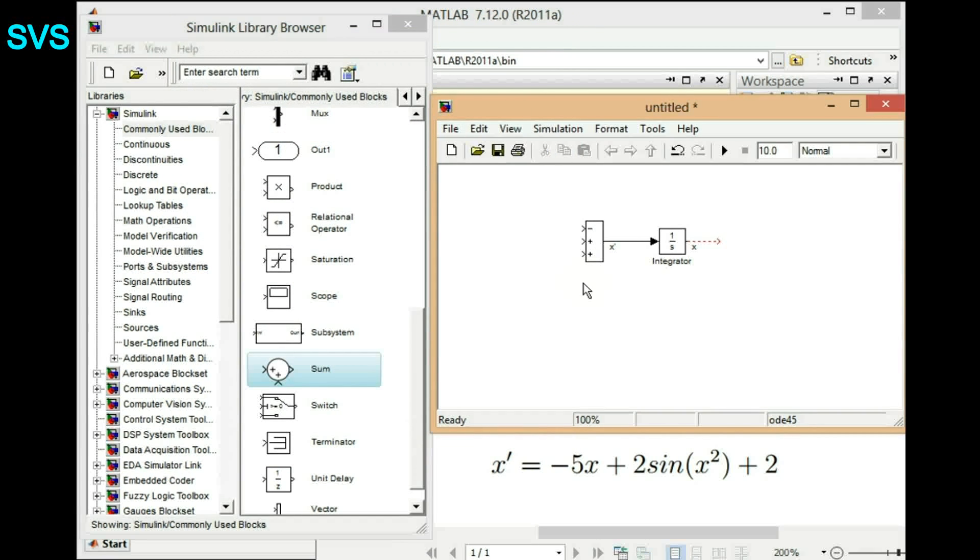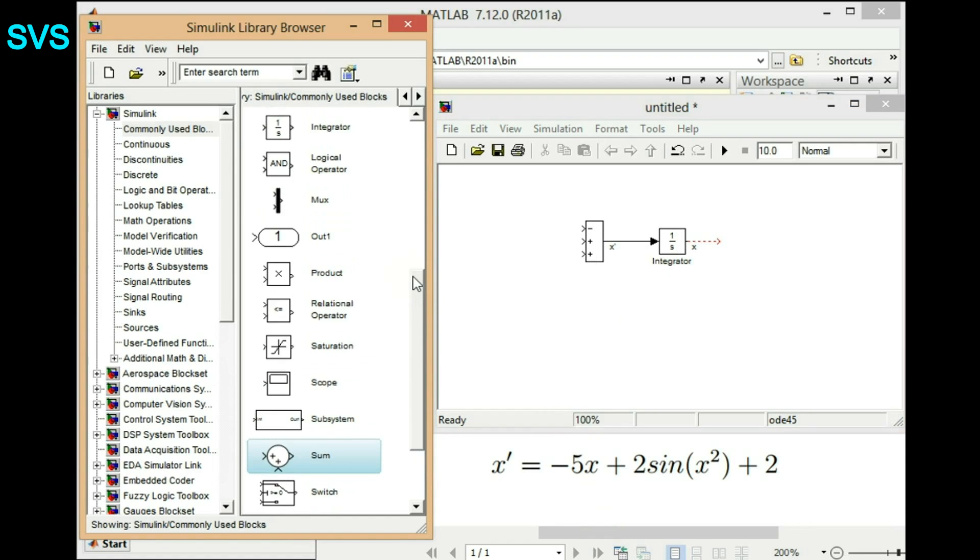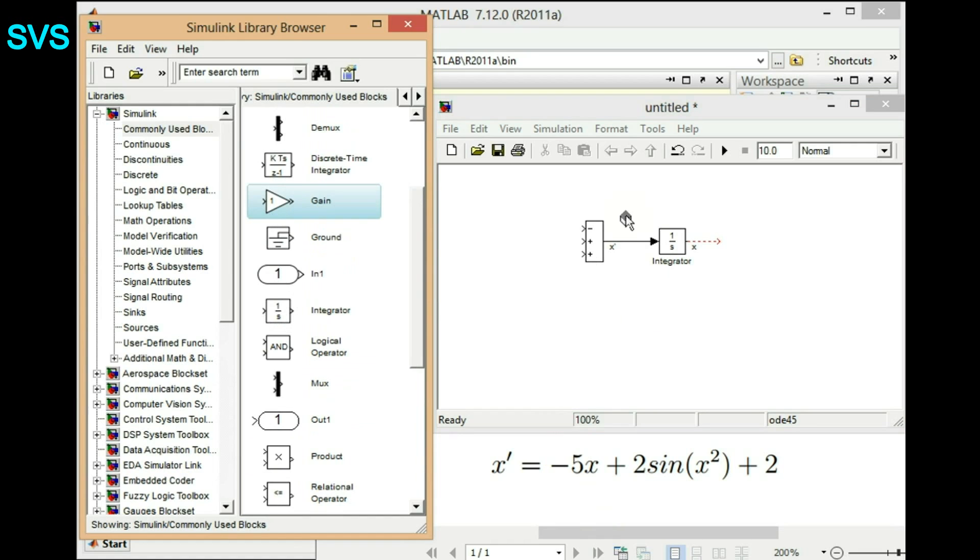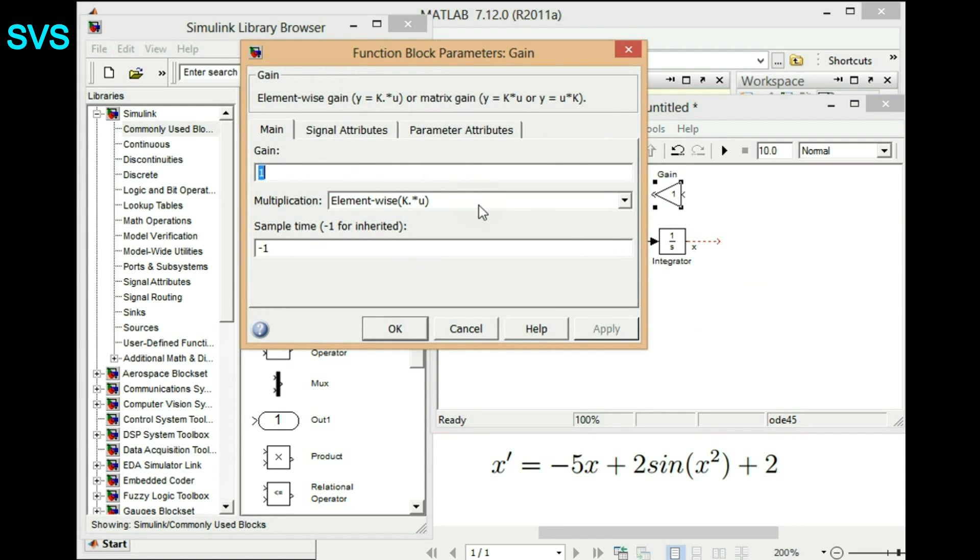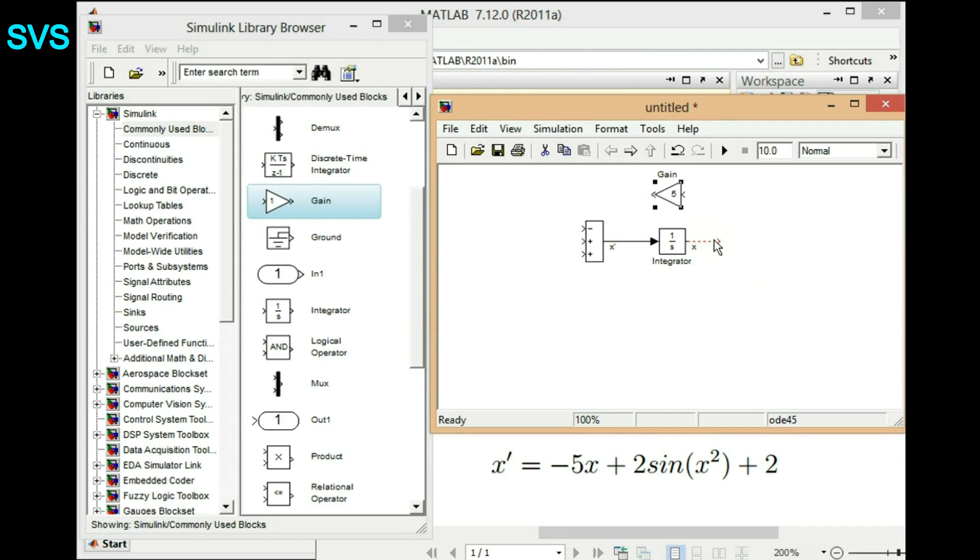The first parameter is 5x and that too it will be going to minus. So let's have a gain of 5. We'll choose a gain block and for rotating we'll press Ctrl+R. Yes, and then we'll connect it and we'll write that gain as 5 and we'll connect it to x.